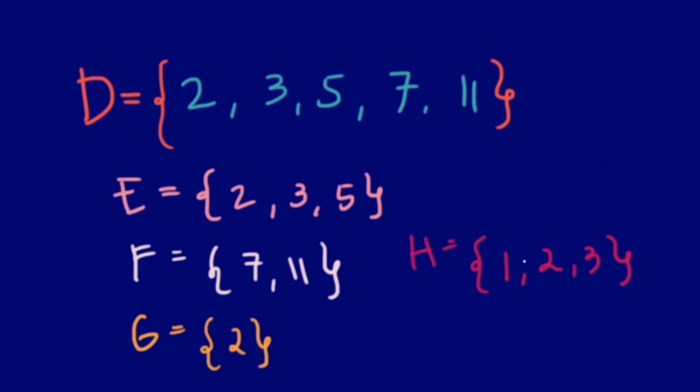But we cannot say that H = {1, 2, 3} can be a subset of D because the element 1 is not a part of the parent set D. In simpler terms, sets E, F, and G are considered subsets of D because each of their elements is an element of D.